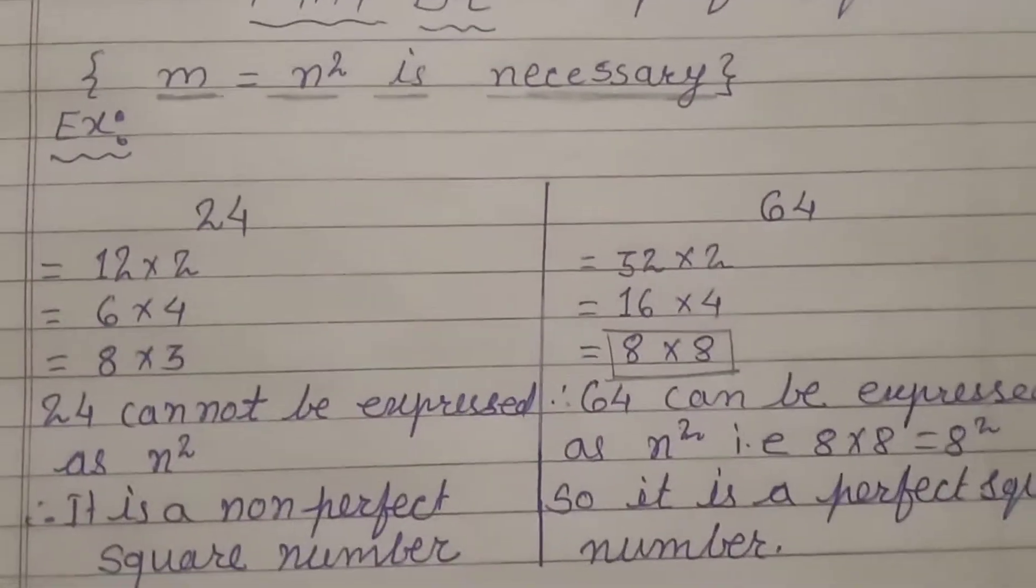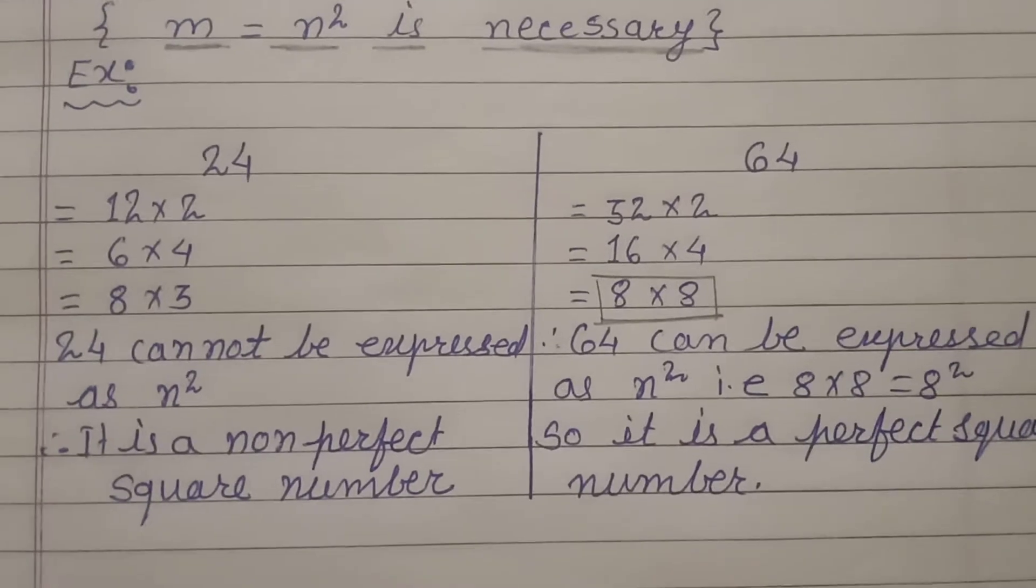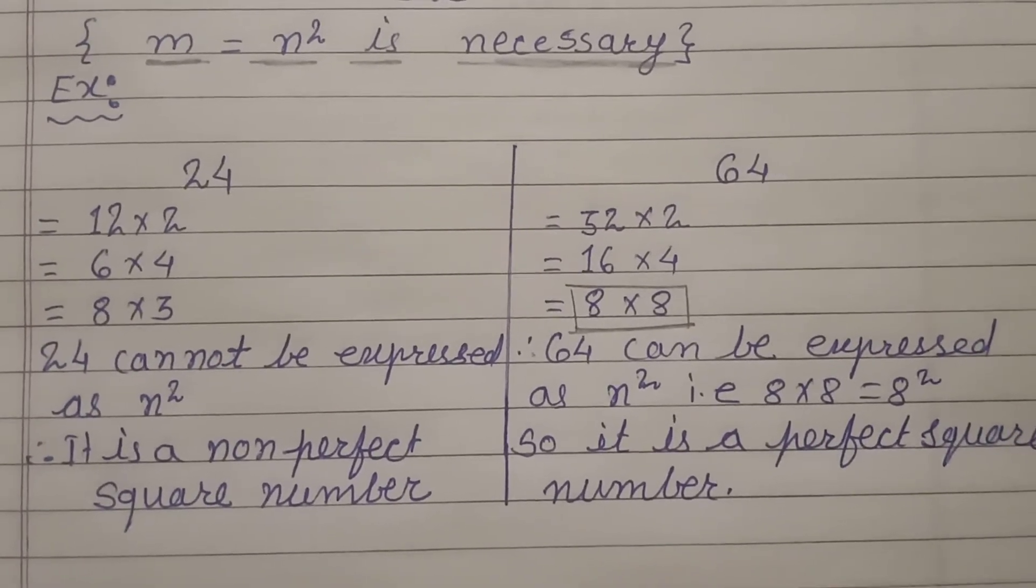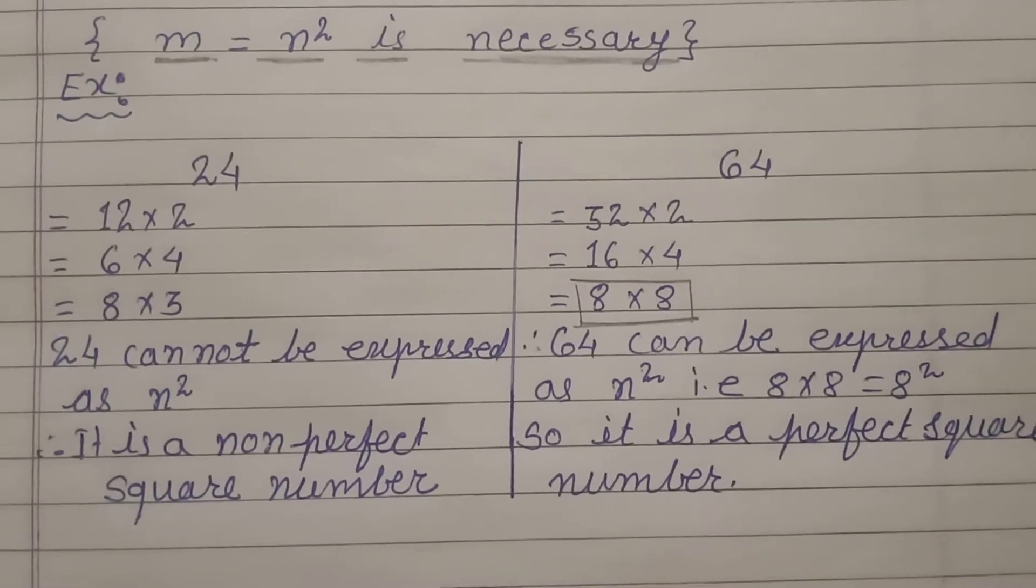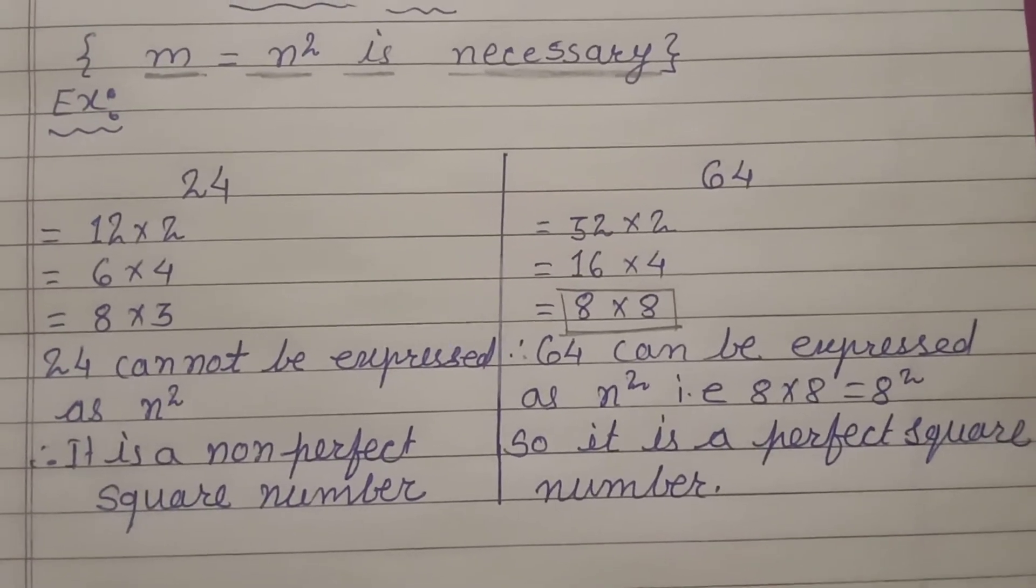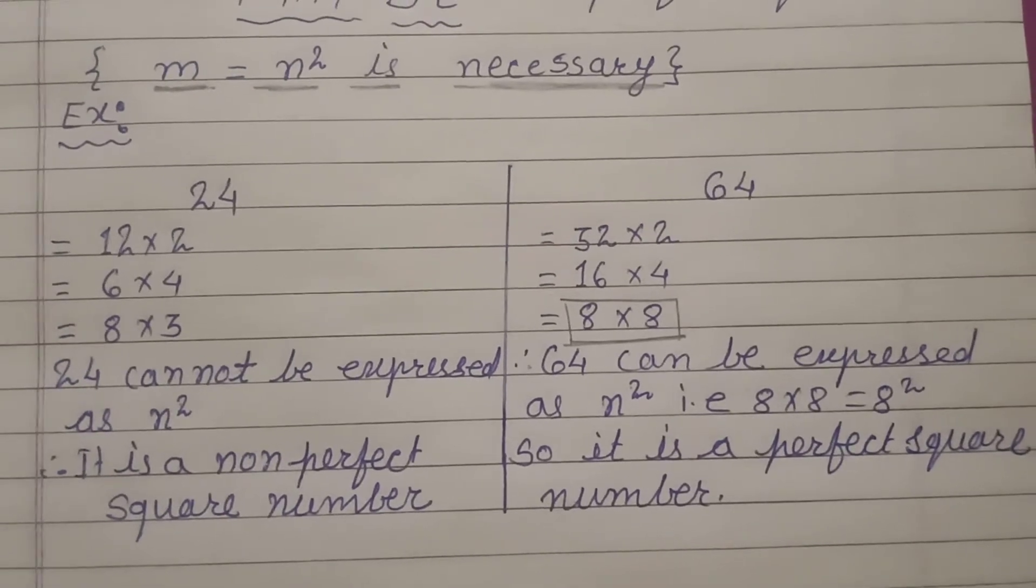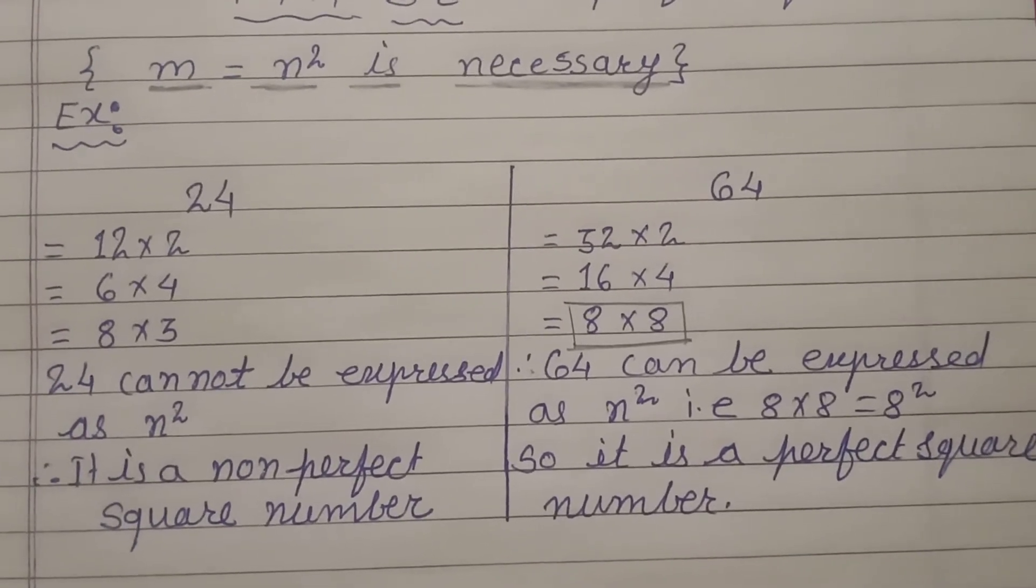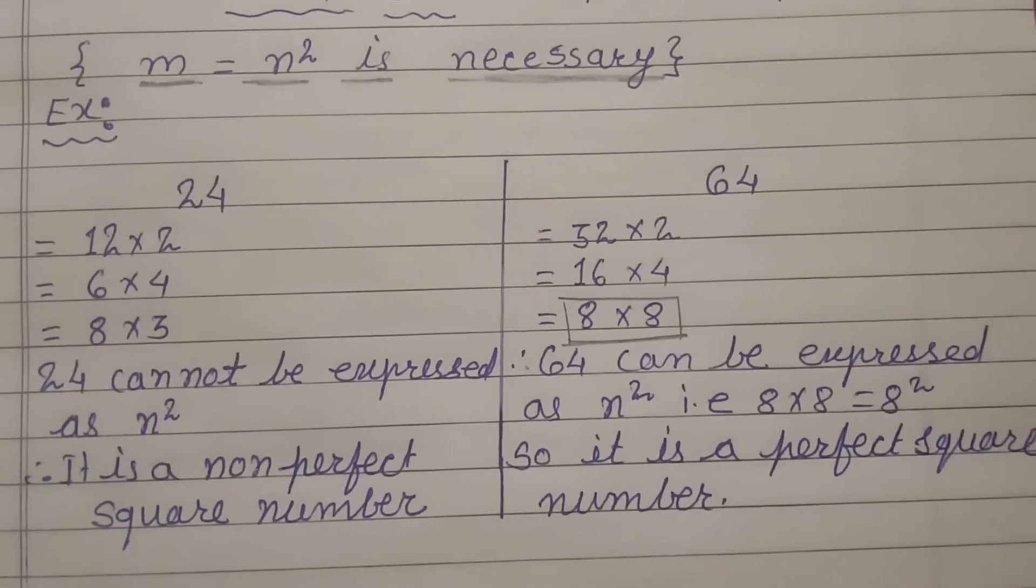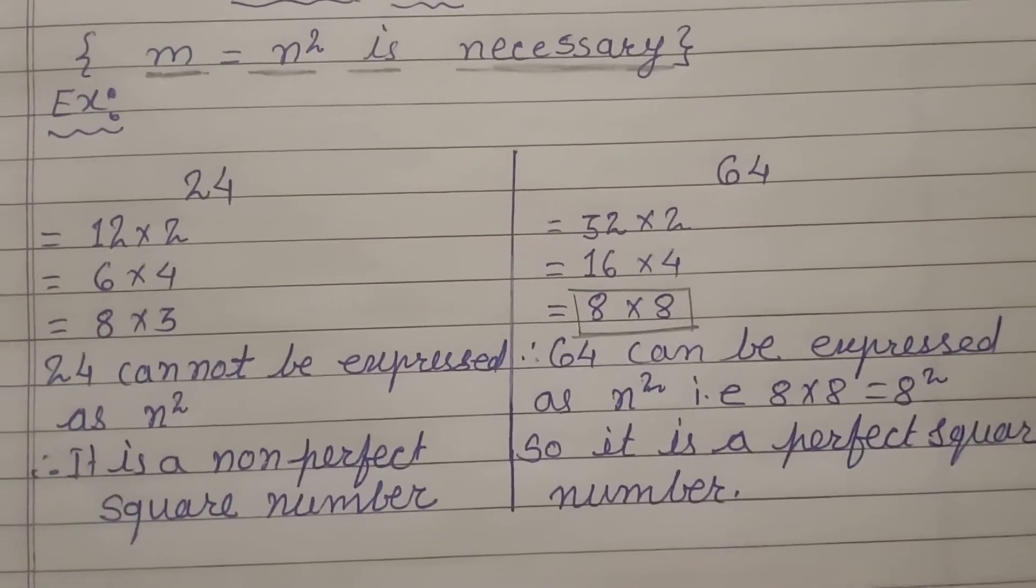Here is an example for you. You can see that 24 and 64 both numbers are having 4 at its ones place and as per the property of square numbers if a number is having 4 at its ones place it may be a perfect square. Now let us see why 24 is not a perfect square and why 64 is a perfect square.